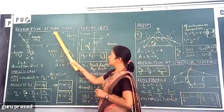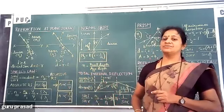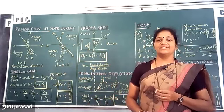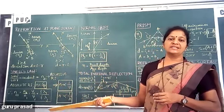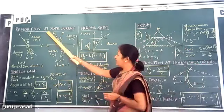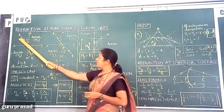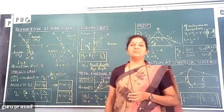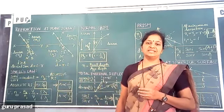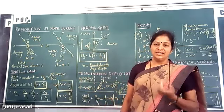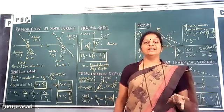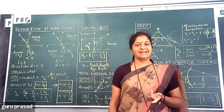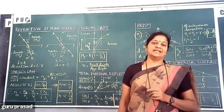Refraction is a phenomenon of bending of light when it travels from one medium to another medium. The medium we consider — air's refractive index is taken to be 1. For water, the refractive index is 1.33, that is 4 by 3. For glass, generally 1.5 — it need not be exactly equal to 1.5, but we generally consider it as 1.5.